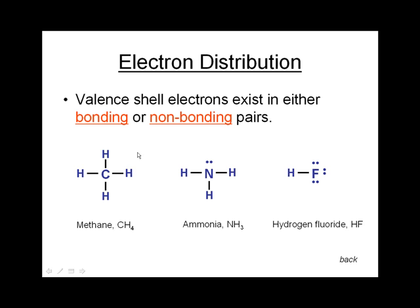The elements in the second period, carbon to fluorine, all can be understood to react until they have filled octets in their valence shell. So in this first example of methane, the carbon atom has achieved a full octet by entering into four bonding interactions with four separate hydrogen atoms. Remember that in each chemical bond, indicated by this line between the atoms, represents one shared electron pair. So there are two, four, six, eight electrons in total — and one, two, three, four bonding pairs.